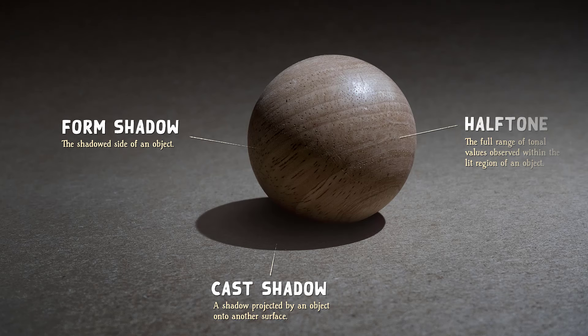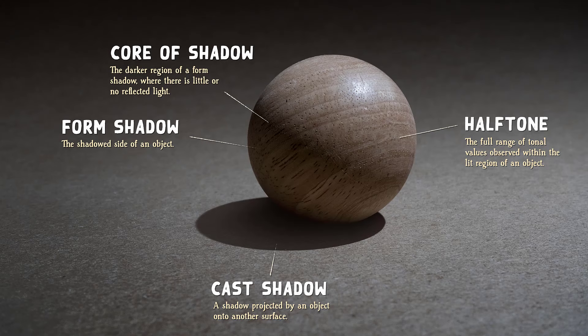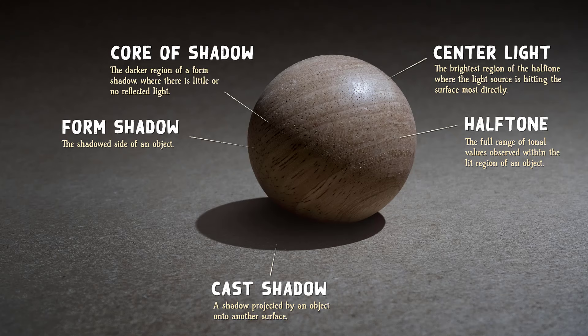Half tone describes the full range of tonal values observed within the lit region of an object. Depending on the material and local color of the object, half tones can be quite dark in value, but never as dark as regions in shadow. The darker region of a form shadow is known as the core shadow. It's darker because these planes are facing away from reflected light that illuminates other regions of the shadow. The brightest region of the half tone, where the light source hits the surface most directly, can be referred to as the center light. These brightest half tones will appear on planes that face the light source most directly.